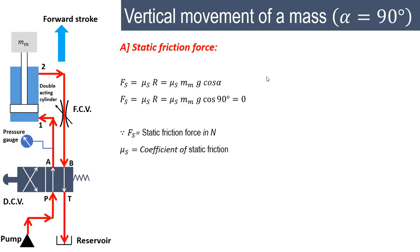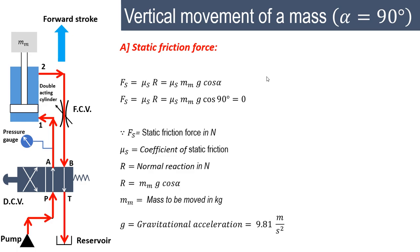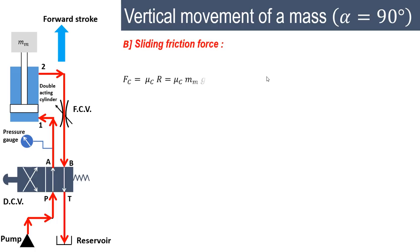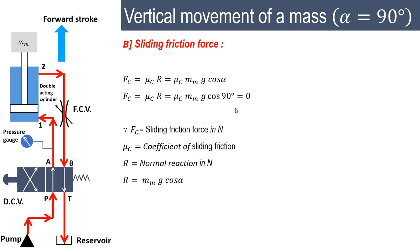Here, F_s is the static friction force, mu_s is the coefficient of static friction, R is the normal reaction, mm is the mass to be moved, and g is 9.81, as seen in the previous video. Similarly, for the sliding friction force, substituting alpha = 90° due to the vertical position of the cylinder, the value is also zero. So in the case of a vertical cylinder, both static and sliding friction forces are theoretically zero.